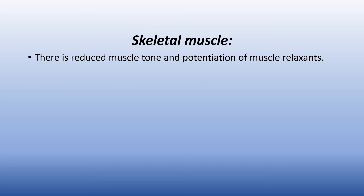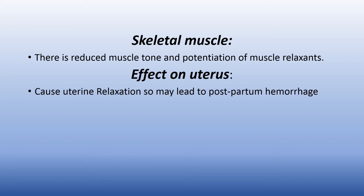Skeletal muscle: they reduce muscle tone and potentiate muscle relaxants. Effect on the uterus: they cause uterine relaxation, which may lead to postpartum hemorrhage. So if we are managing a pregnant woman during delivery, for example during cesarean section, we use the minimal amount possible of inhalational volatile anesthetic because it can cause uterine relaxation.